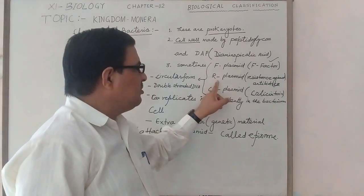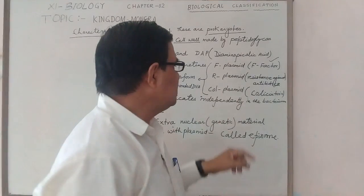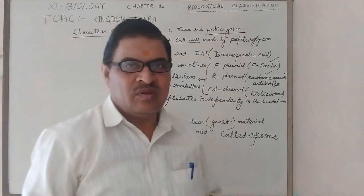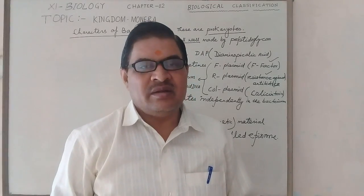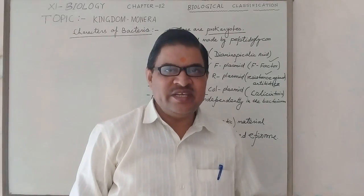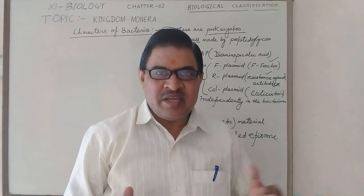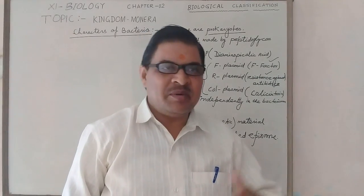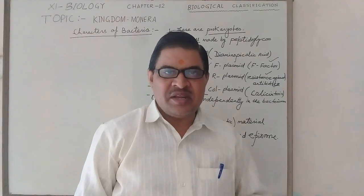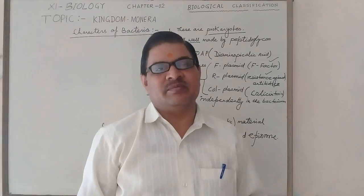R-plasmid generally shows resistance against antibiotics. The first antibiotic, penicillin, was discovered by Alexander Fleming in 1928 from Penicillium notatum, a type of fungus. Antibiotics are products obtained from one microbe that kill or inhibit the growth of another microbe.